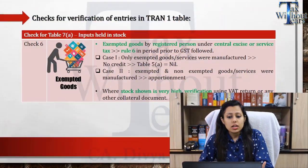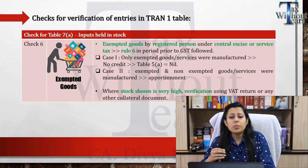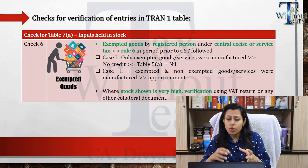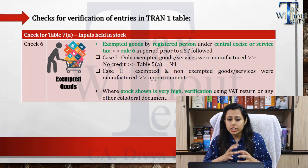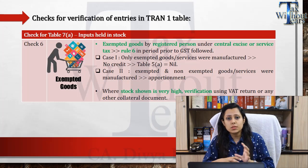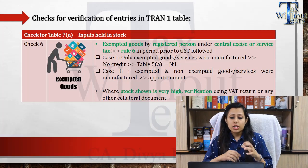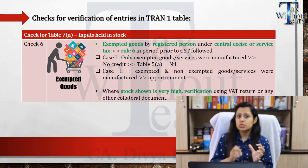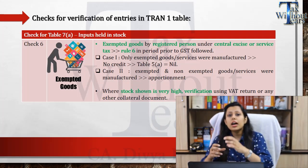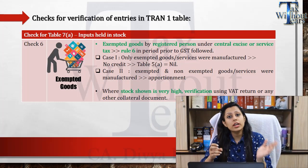Table Number 7 has been very important in Tran 1 and has been subject to many queries and doubts. It states that if exempted goods were being manufactured by the registered person under central excise or service tax, then as per Rule 6, only the proportionate or entire ITC was to be reversed. If only exempted goods were produced, you were not eligible to claim any ITC; if partially exempted and partially taxable, a proportionate amount was to be taken. In Table 7, if you had the excise invoice and were registered in excise, that credit must have flowed via Table Number 5.